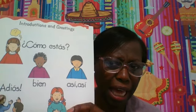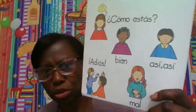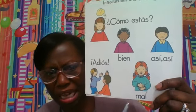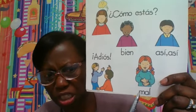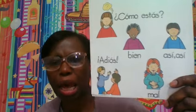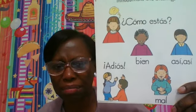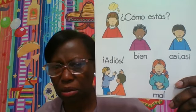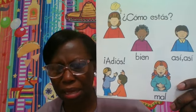Muy bien. If you're not doing so good, class, we say mal — not so good. Got a tummy ache? Mal. And then we say goodbye. What do we say? Adios. Muy bien. Now let's go over our numbers from one to five using the sounds and names of the animals.